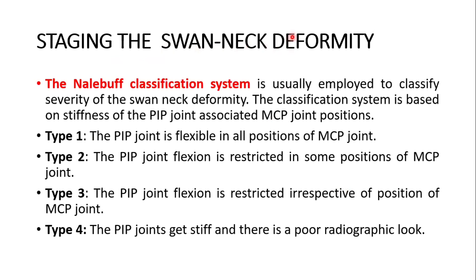Regarding the staging of swan neck deformity, the Nalebuff classification system is used. It is based on stiffness of the proximal interphalangeal joint and the associated metacarpophalangeal joint positions. Type 1: the PIP joint is flexible in all positions of the metacarpophalangeal joint. Type 2: PIP joint flexion is restricted in some positions of the metacarpophalangeal joint. Type 3: proximal interphalangeal joint flexion is restricted irrespective of the metacarpophalangeal joint position. Type 4: the proximal interphalangeal joints are stiff with poor radiographic appearance.